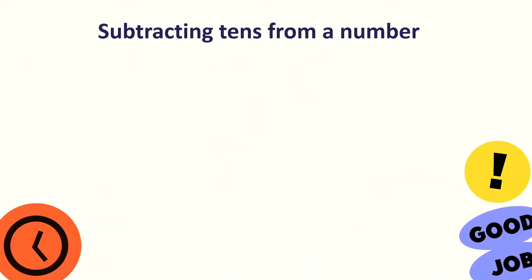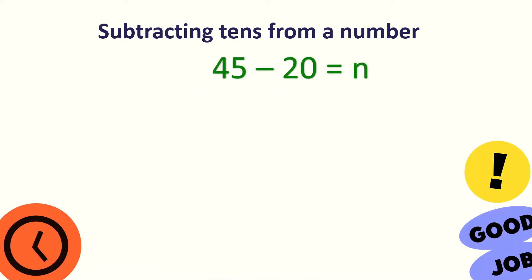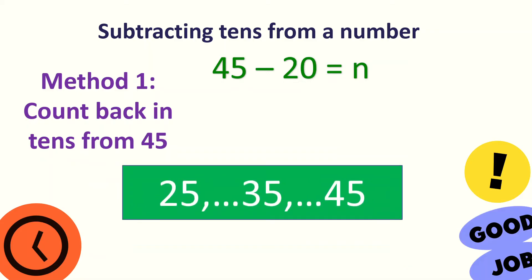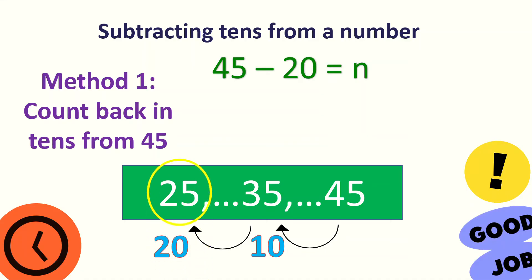Let's subtract tens from a number. Let's say we have 45 minus 20. Let's use counting back — this time we will count back in tens from 45. 45, then 35 — the difference is 10. And then one more ten: 35 minus 10 is 25. So, 45 minus 20 is 25.